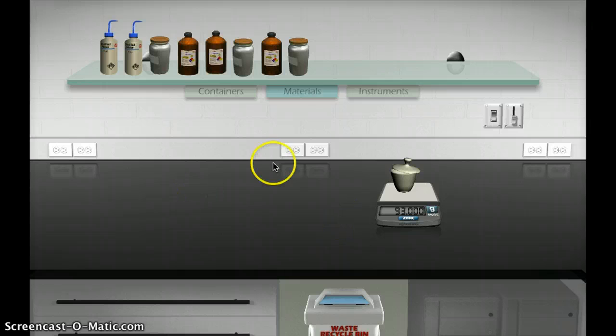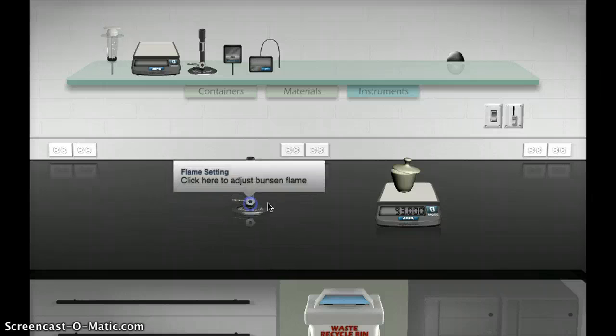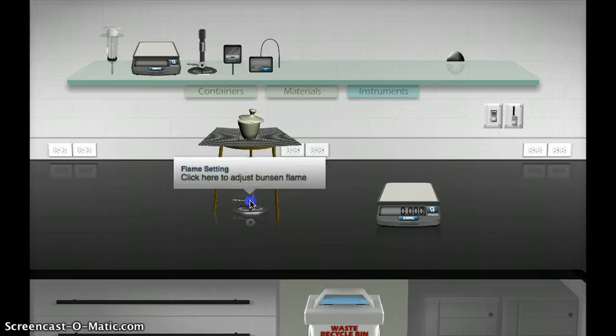Now we're going to set up our Bunsen burner, put our crucible over the Bunsen burner and set it on a low setting.